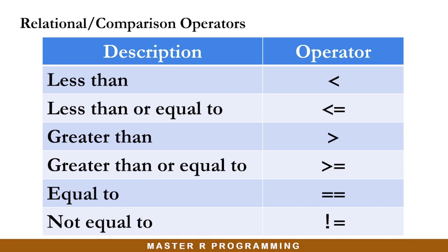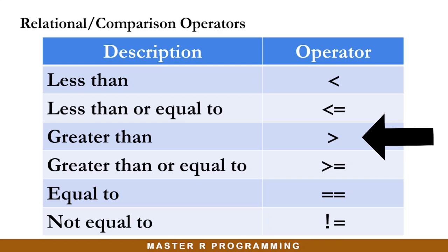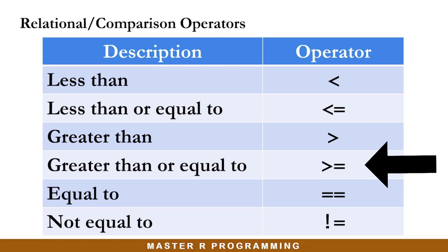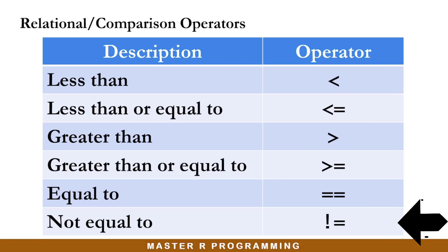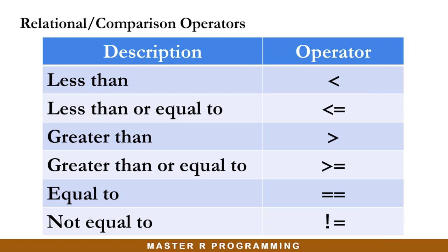These are the various relational or comparison operators in R. We have the less than, less than or equal to, greater than, greater than or equal to, equal to, and not equal to. On the right-hand side, we have the corresponding operators that we use in R. So let us dive right into R and have a feel of how these relational operators work.